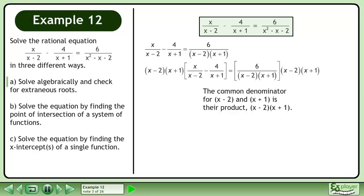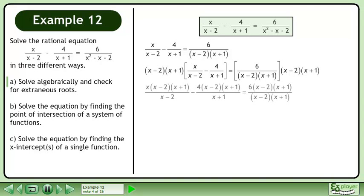Multiply both sides of the equation by the common denominator. Distribute x minus 2 times x plus 1 to each term. Cancel identical factors in the numerator and denominator. Simplify. Bring all of the terms to the left side of the equation. Factor the trinomial.